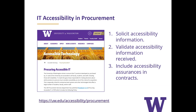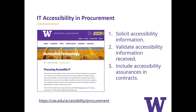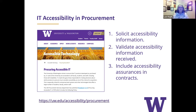Then validate that information, which is what Terrell is going to get to with the VPAT. If you don't have accessibility requirements physically in your contracts, and something changes with the vendor later on — say they do an update — you don't really have anything to fall back on if it's no longer accessible. So getting it actually in your contracts is really important to have that be enforceable down the road.